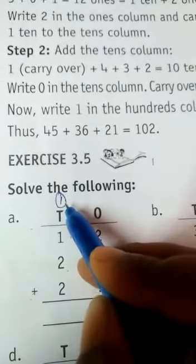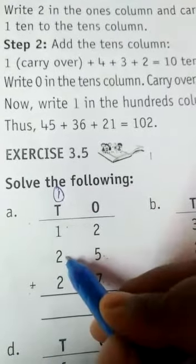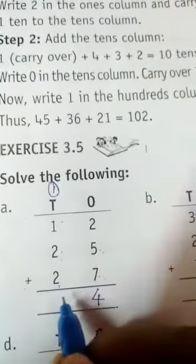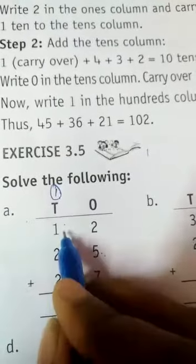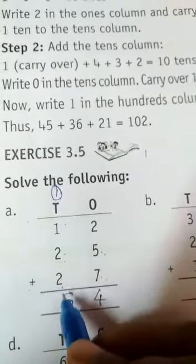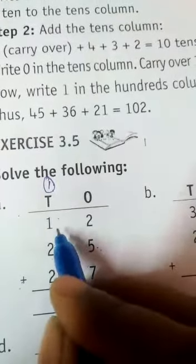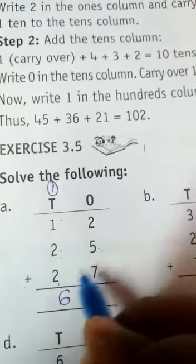Round it. Then 1 plus 1 is equal to 2, 2 plus 2 is equal to 4, 4 plus 2 is equal to how much? 6. So 12 plus 25 plus 27 is equal to 64.